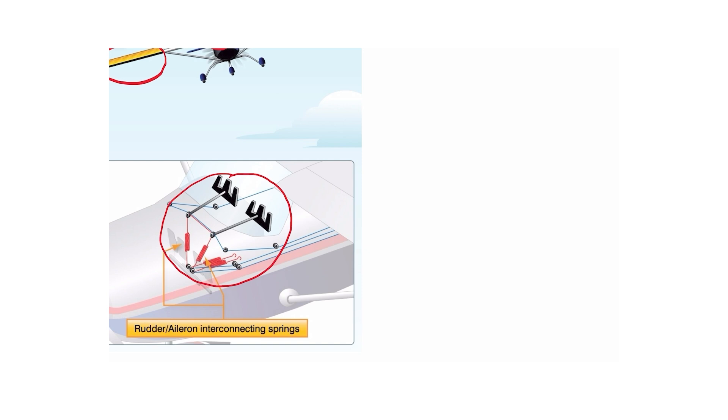So in summary, adverse yaw: bank left, adversely yaw right. Bank right, adversely yaw left. So the inside aileron, the low-wing inside aileron, we're creating more drag through either differential aileron or frise-type aileron, or we're automatically moving the rudder to make that happen.